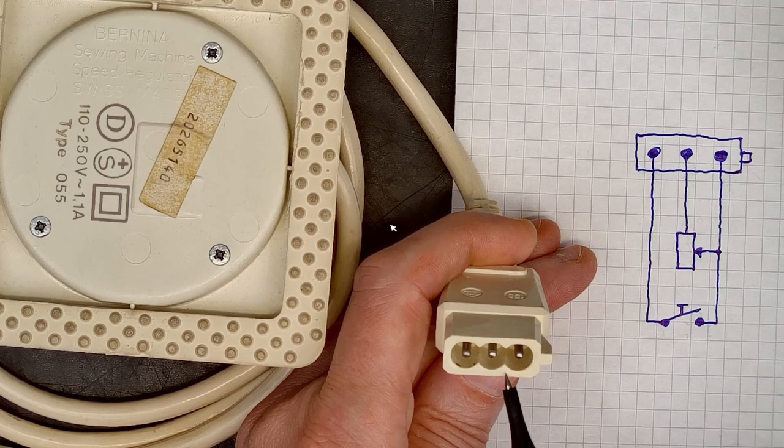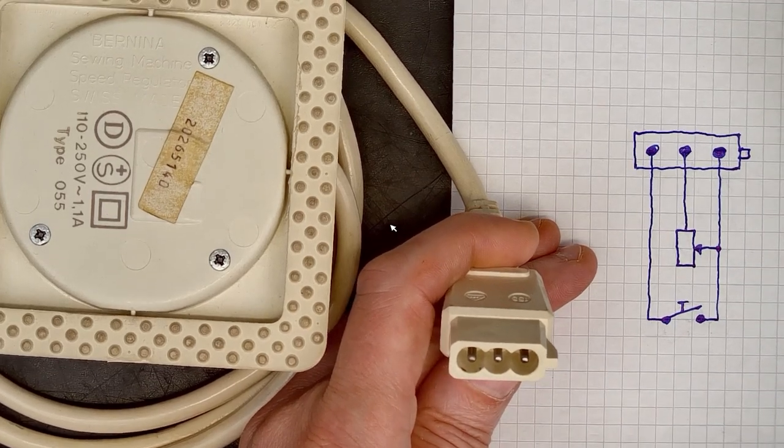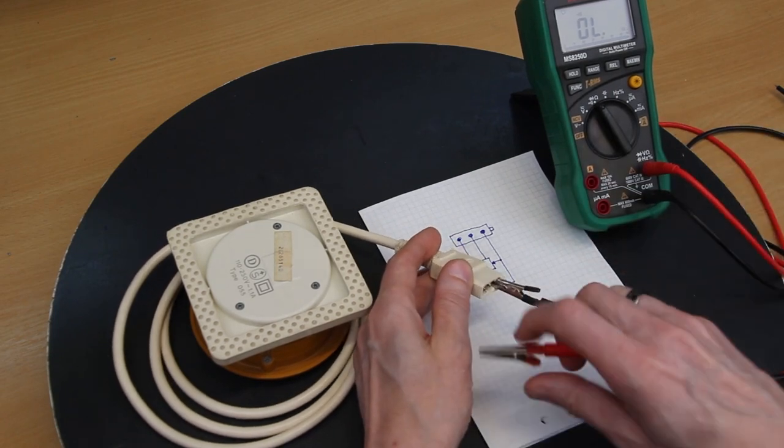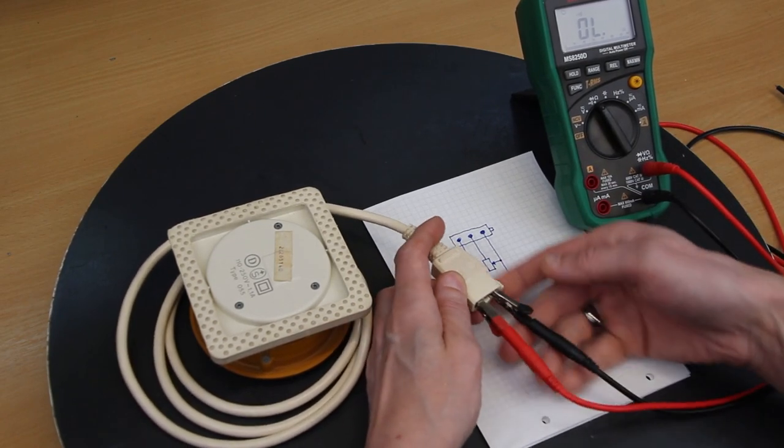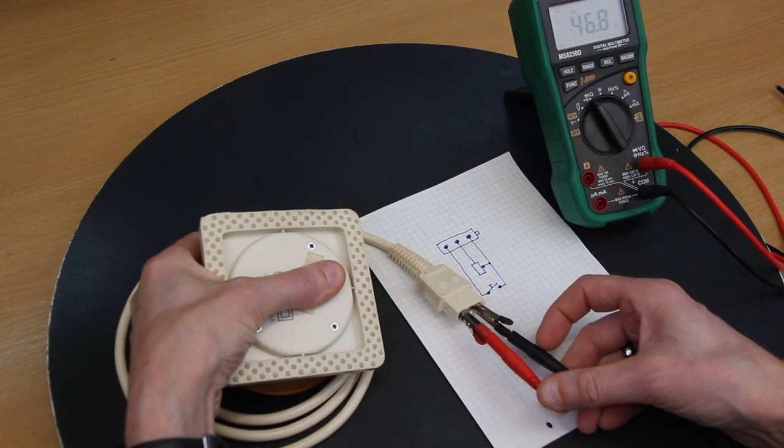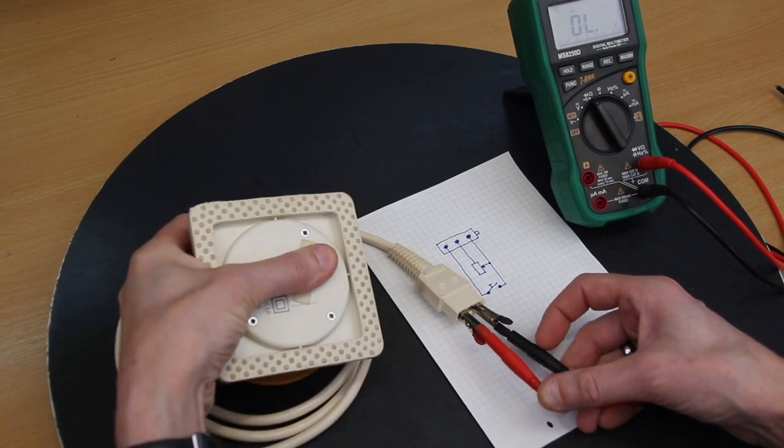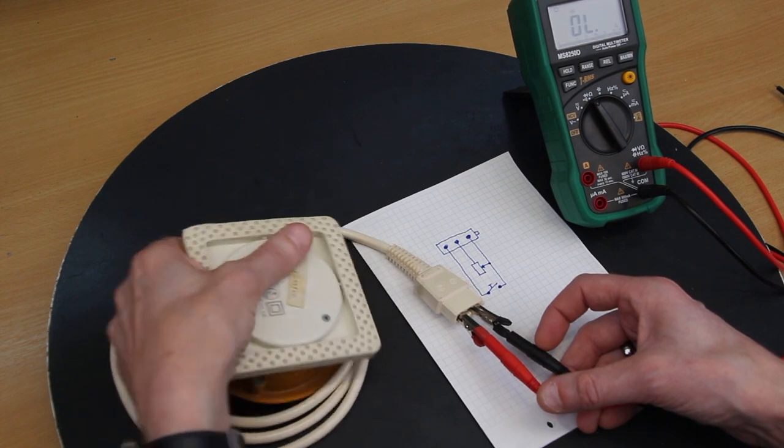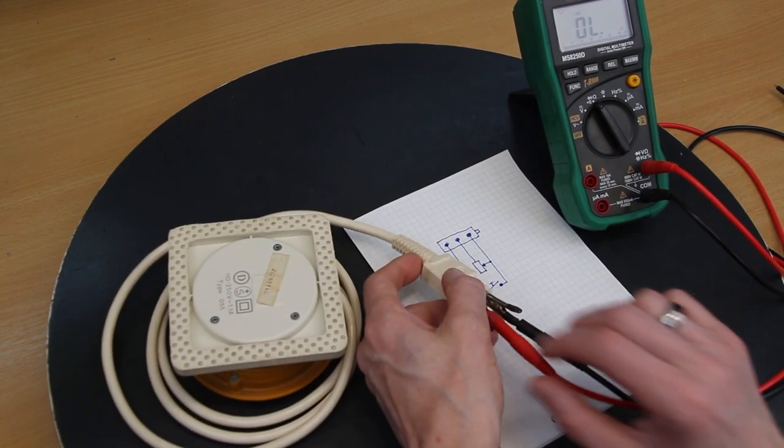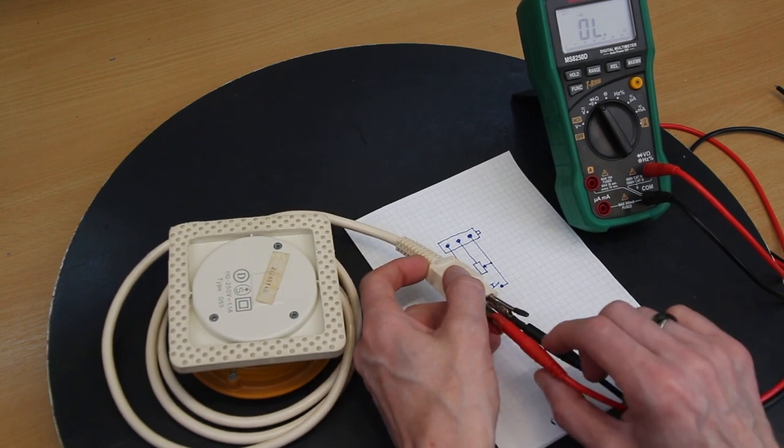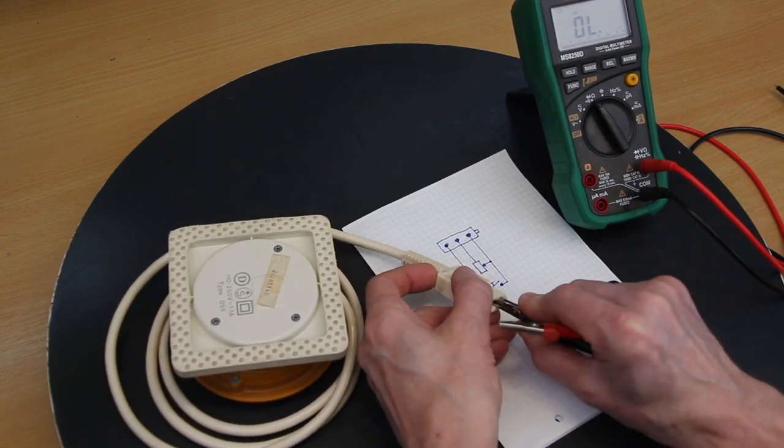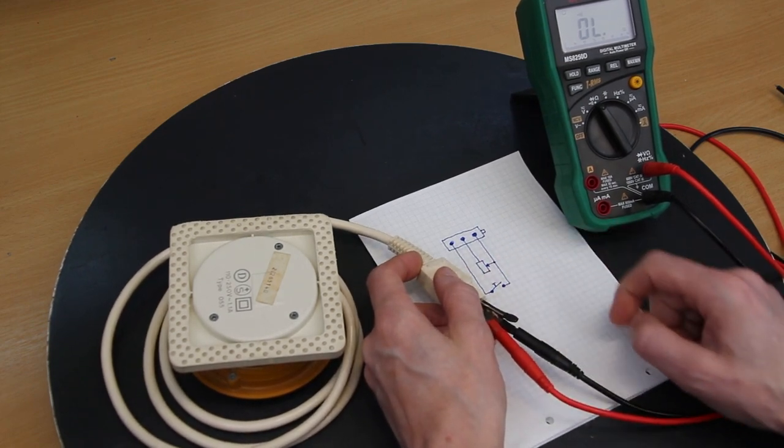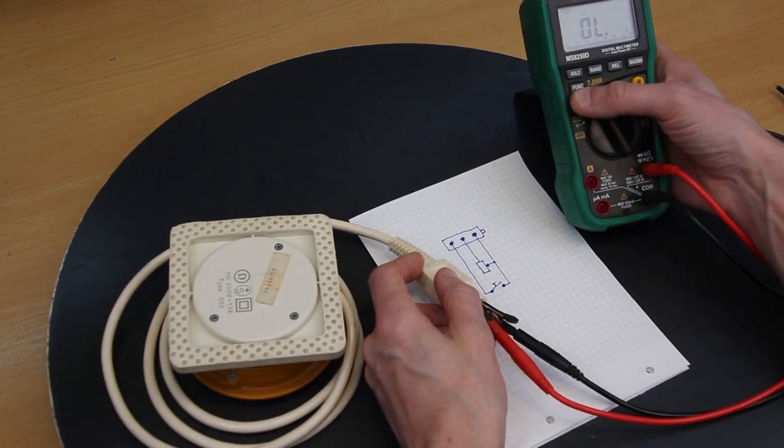So to first check if the micro switch is working, I connect there and when I press the foot controller so it clicks, then I can check if the micro switch is working, which it is.